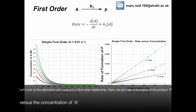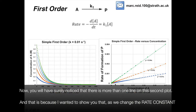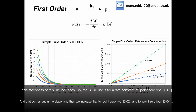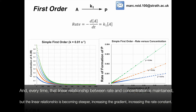Let's look at the alternative plot showing the rate of formation of product P versus the concentration of A. As we increase concentration of A, following the blue line we see a linear increase in the rate of formation of P. I've also shown that as we change rate constant k1 — from 0.01 to 0.02 to 0.04 — the steepness of this line increases. The linear relationship between rate and concentration is maintained, but the gradient increases as we increase the rate constant.